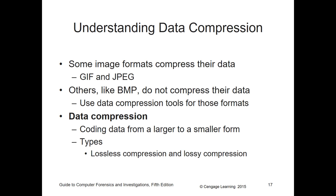Some image formats compress their data — JIF and JPEG, for example, which is why they're smaller. Others, like bitmap, don't compress their data, so data compression tools are used for those formats. Data compression is a way to take a larger file and force it to be smaller. The main types are lossless compression and lossy compression.